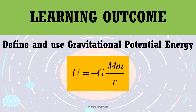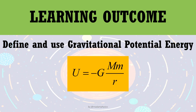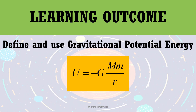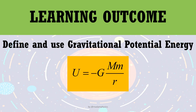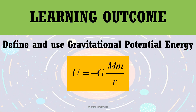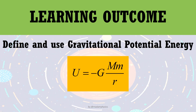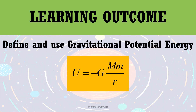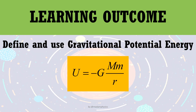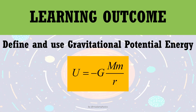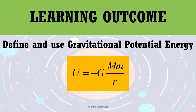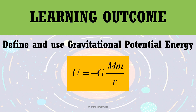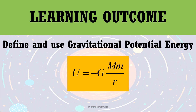Here is the learning outcome for today. At the end of this lesson you should be able to define and use the formula of gravitational potential energy, which is given by U equals negative GMm over r. This formula looks almost the same as the formula for force and gravitational field strength, so make sure you know the difference between them.